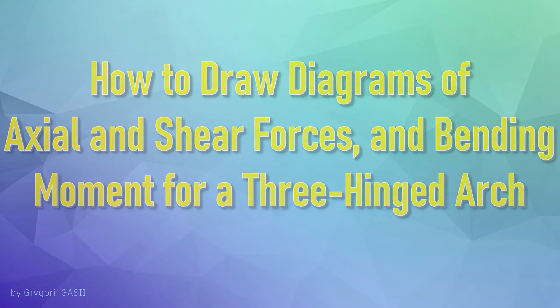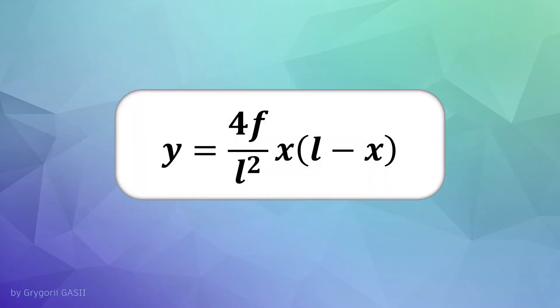Consider an example of a three-hinged arch that is built with the equation. Where F is the boom of the arch, L is the span of the arch, and X and Y are coordinates of the arch.